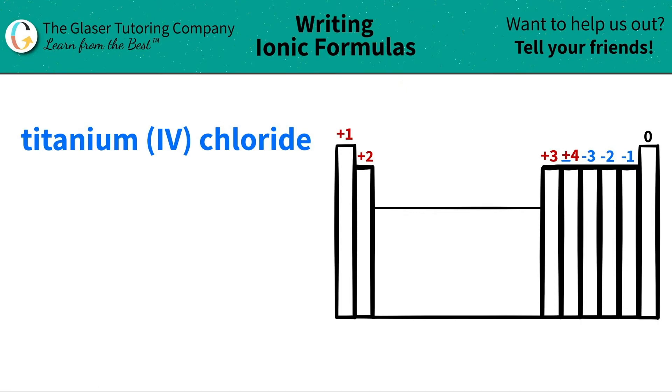Today, we are going to write the formula for the ionic compound titanium (IV) chloride. So let's see where these elements are located on the periodic table, and then we'll write the formula.